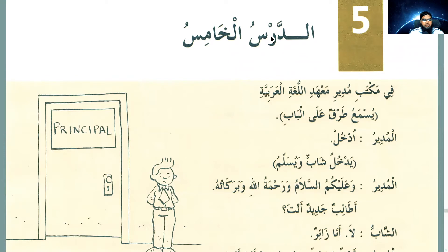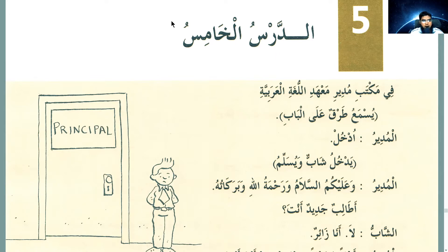As-salamu alaykum wa rahmatullahi wa barakatuh. Bismillah, alhamdulillah, was-salatu was-salamu ala rasulillah wa ala alihi wa sahbihi ajma'in. Amma ba'du. Rabbi shrah li sadri wa yassir li amri wahlul uqdatan min lisani yafqahu qawli. Rabbi zidni ilma. Allahumma la sahla illa ma ja'altahu sahla, wa an taj'ala al-hazna idha shi'ta sahla. Ahlan wa sahlan wa marhaban bikum.